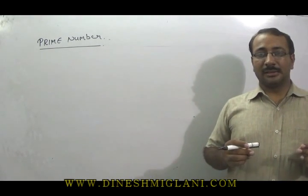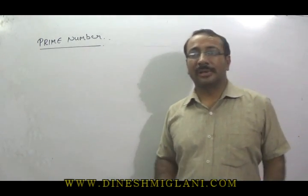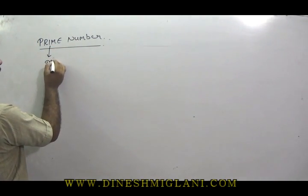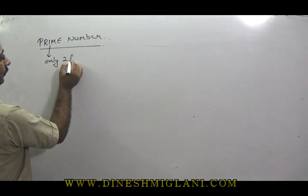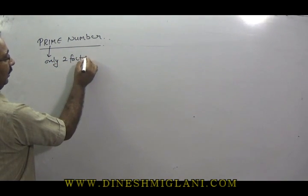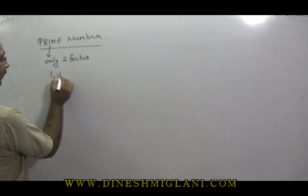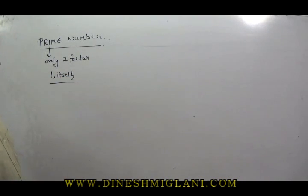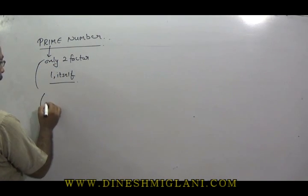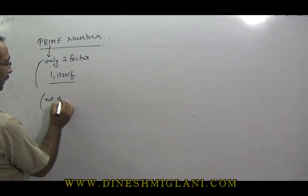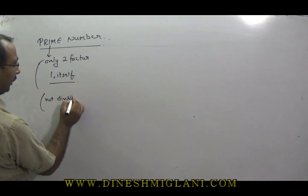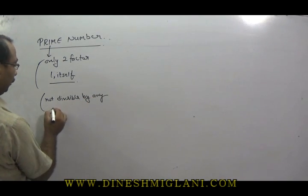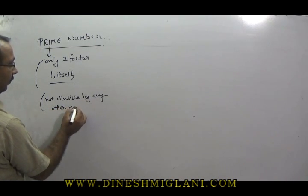First, what do you mean by a prime number? A prime number is a number which has only two factors. One factor is one and the second one is itself. That is the basic definition of a prime number. Or sometimes you say, a number not divisible by any other number. So these numbers are said to be prime numbers.